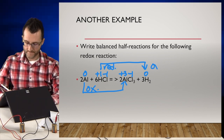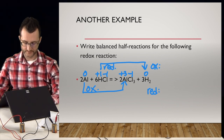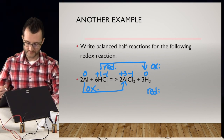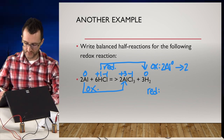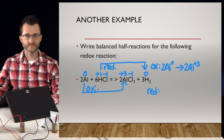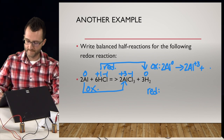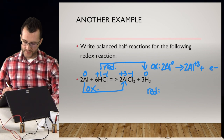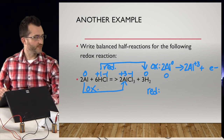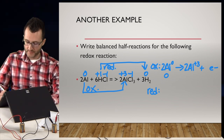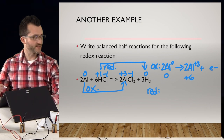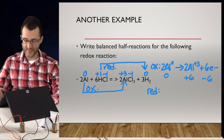For the oxidation half-reaction, we keep the coefficients: 2Al⁰ → 2Al³⁺ + e⁻. Electrons are a product. To balance charge: left side is zero, right side has two plus-three charges — that's a total of plus six. So we need six electrons on the right: 2Al⁰ → 2Al³⁺ + 6e⁻.